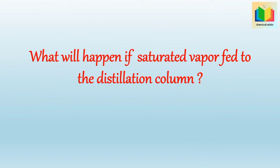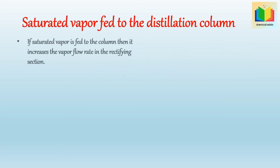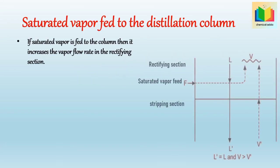Next question: what will happen if saturated vapor is fed to the distillation column? If saturated vapor is introduced as feed, then the vapor flow rate in the rectifying section increases, and the liquid flow rate in both the stripping section and rectifying section will be the same. Hence we get L' = L and V > V'.